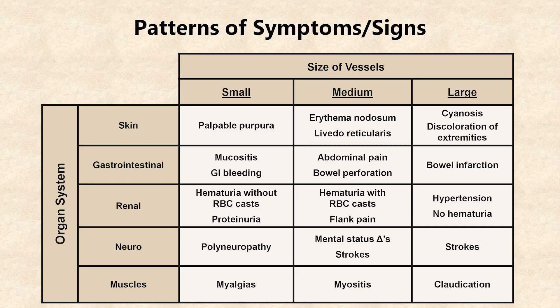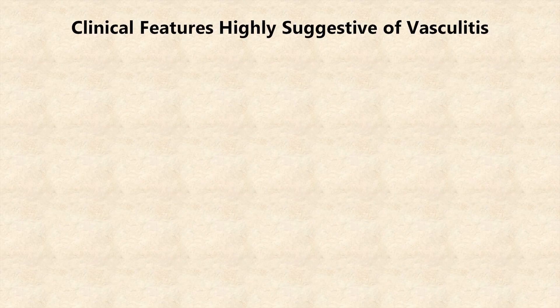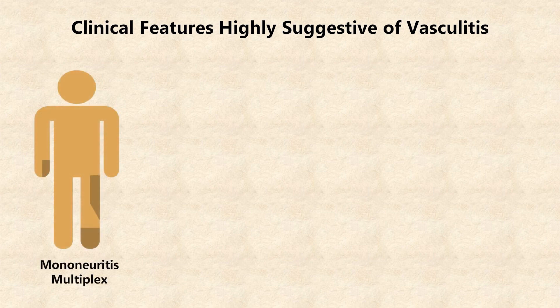Unfortunately, the presentation of vasculitis is much more complicated than this because no one individual vasculitis disease leads to all of the findings in any one column. There are, however, certain clinical features that are highly suggestive of vasculitis. The first is something called mononeuritis multiplex, which is a simultaneous or sequential dysfunction of individual, non-contiguous peripheral nerves in a seemingly random pattern. This typically presents as loss of sensory and or motor function within individual nerves over days to weeks.